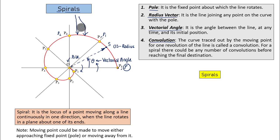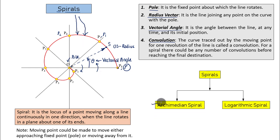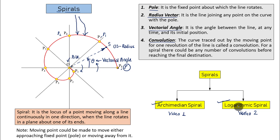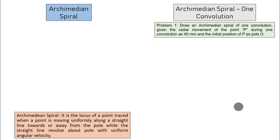Now let's talk about the classification of spirals. They are divided into two types: one is an Archimedean spiral and the other is a logarithmic spiral. In this particular video we'll be talking about Archimedean spiral, and the next video will cover the logarithmic spiral. So let's kick off with an Archimedean spiral.